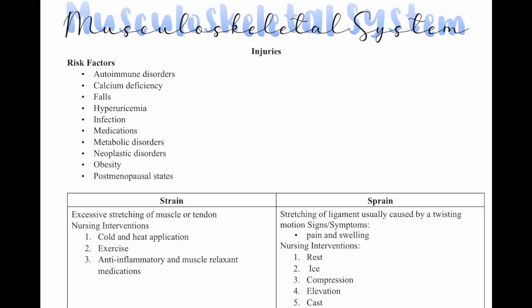We can have either a strain or a sprain. A strain is an excessive stretching of the muscle or tendon, whereas a sprain is a stretching of a ligament, usually caused by a twisting motion. Signs and symptoms include pain and swelling for a sprain. Nursing interventions for a strain are cold and heat application, exercise, anti-inflammatory and muscle relaxant medications. For a sprain, we use RICE: rest, ice, compression or cast, and elevation. Remember that heat is only used for a strain.